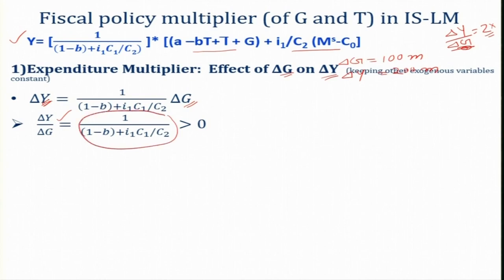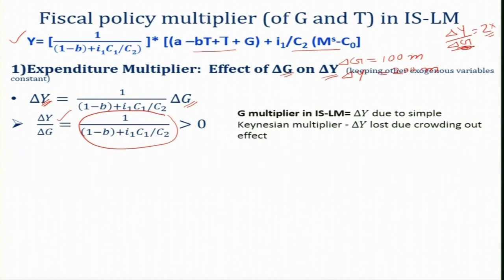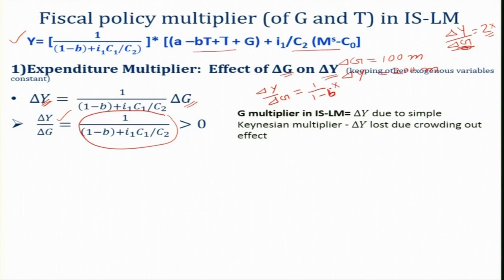In the simple Keynesian model without the money market, the government expenditure multiplier del-Y / del-G was 1/(1-b) — the full multiplier. But since we know that due to the crowding out effect, the increase in output del-Y from del-G is less in the IS-LM model compared to the simple Keynesian model. The government expenditure multiplier in IS-LM is less than the simple Keynesian multiplier — it equals the simple Keynesian multiplier times minus del-Y loss due to the crowding out effect from the increase in the interest rate.